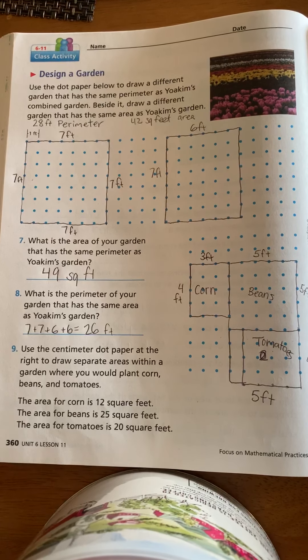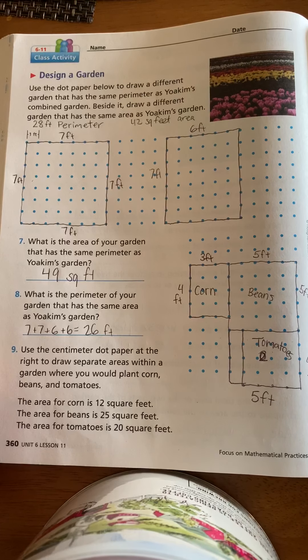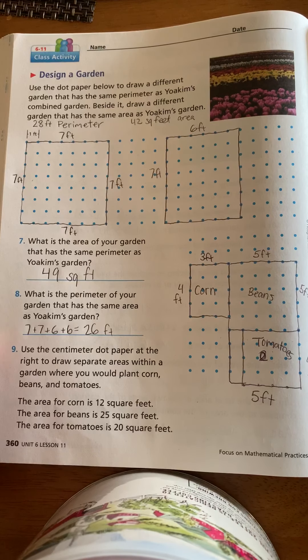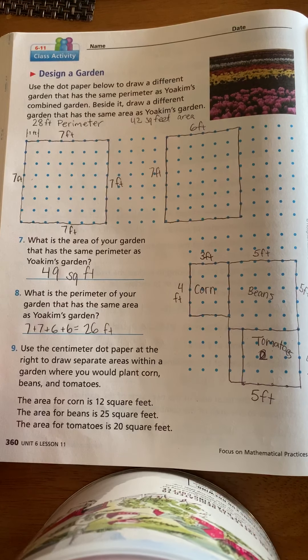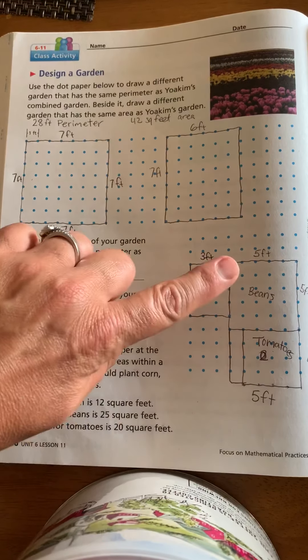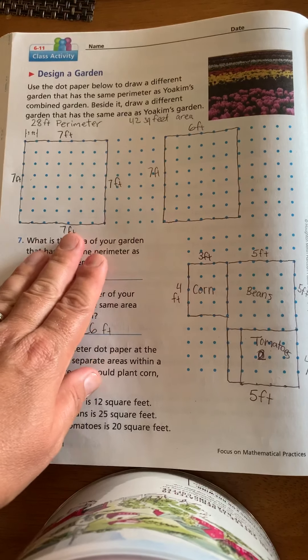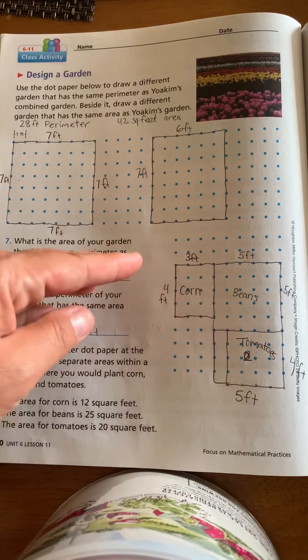And it says, use the centimeter dot paper at the right to draw separate areas within a garden where you could plant corn, beans, and tomatoes. The area of the corn is 12 square feet. I kind of wish I had done this up a little higher. I ended up having to add another row. So if you're doing it, maybe go up one. I did 4 by 3 for the corn because that would equal 12.